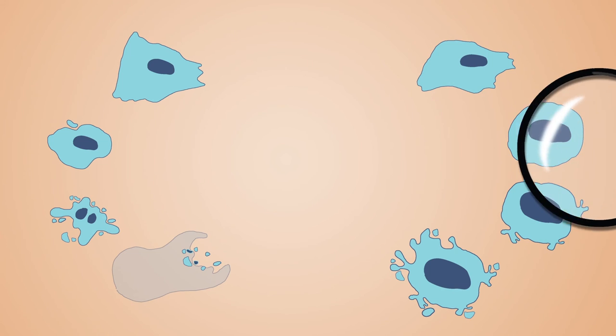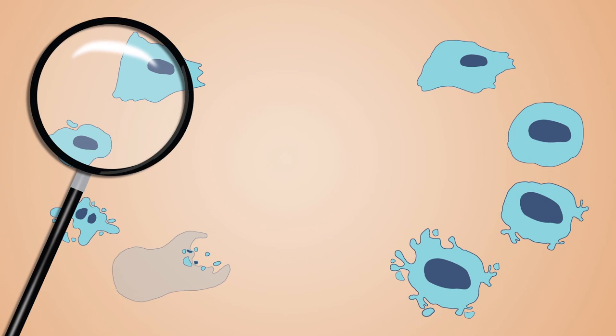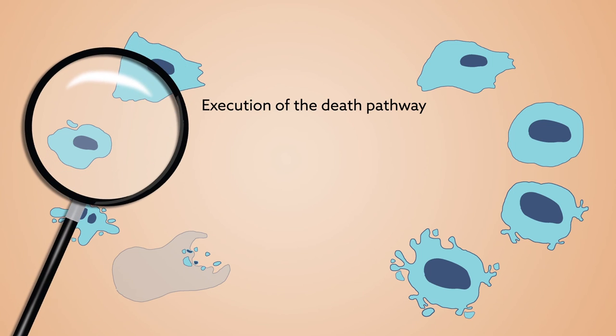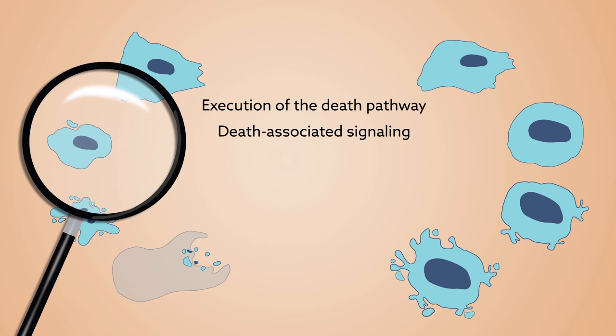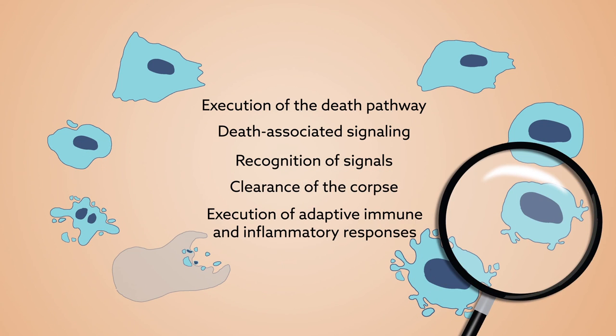The problem is that these deficiencies can arise at any stage in the complex process of cell death: execution of the death pathway, death-associated signaling by the distressed cell, recognition of those signals, clearance of the corpse, or execution of adaptive immune and inflammatory responses.